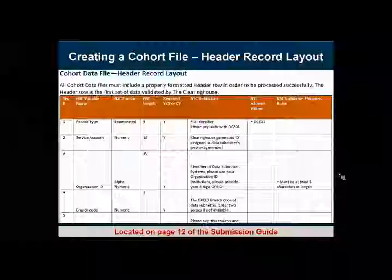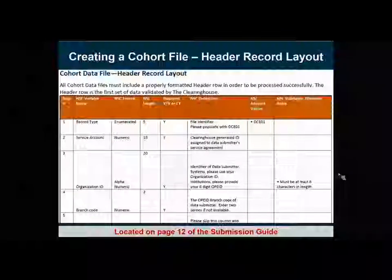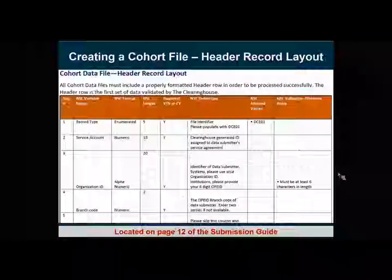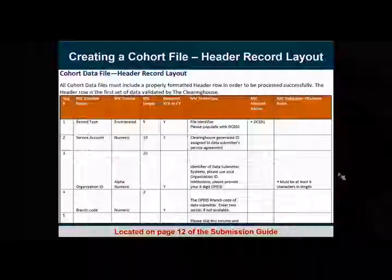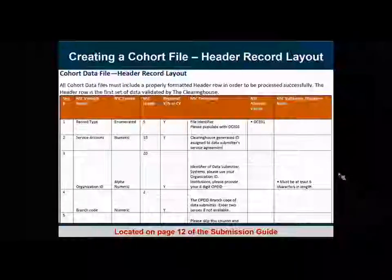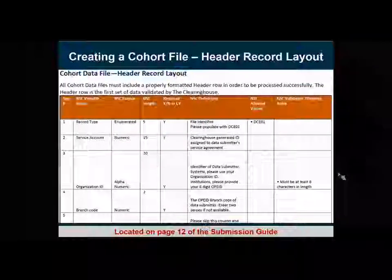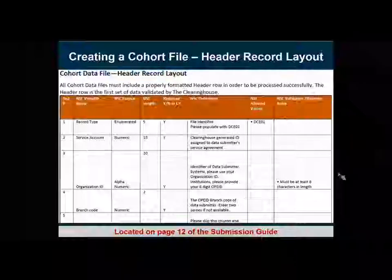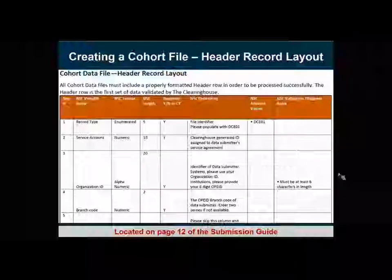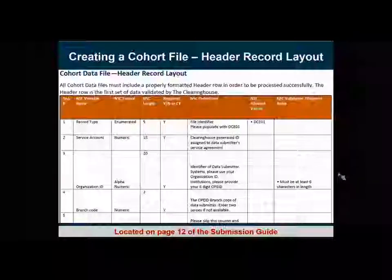In the submission guide, we're looking at the header record layout — this is how the data definition tables appear. This particular table is used to identify the file type and the sender of the file. The first column is the sequence, explaining what order the field must be in. Please note one small nuance: the variable name is informational and it is not a column header. We then have the format, the maximum length limit, the required flag, and the description of the field, followed by the allowed values and validation rules.